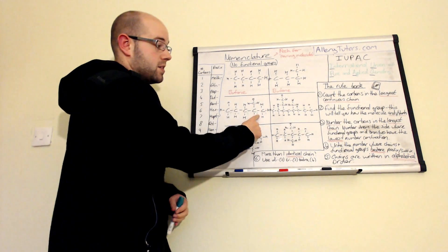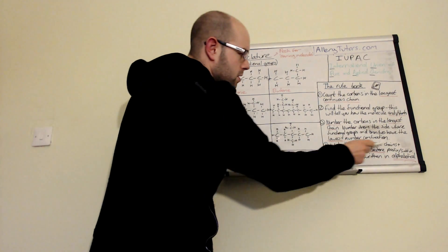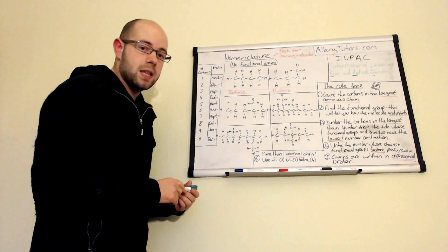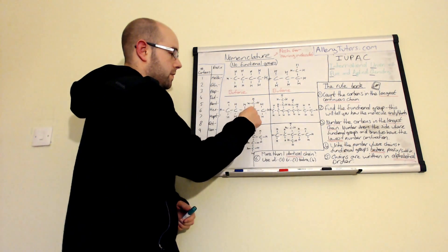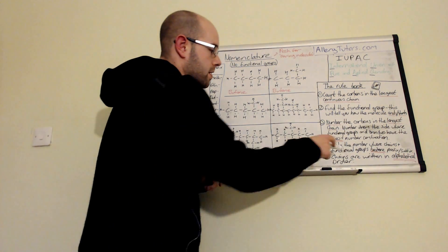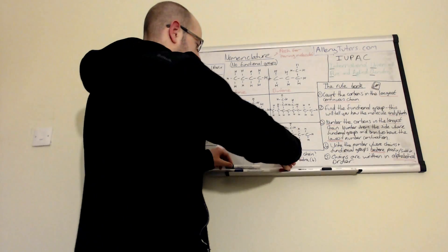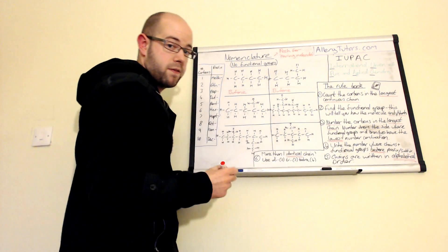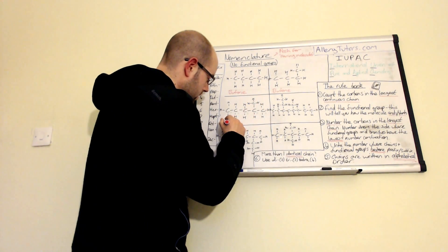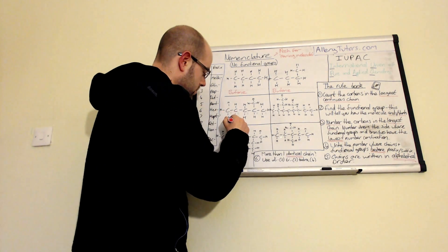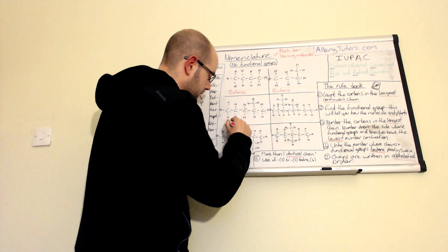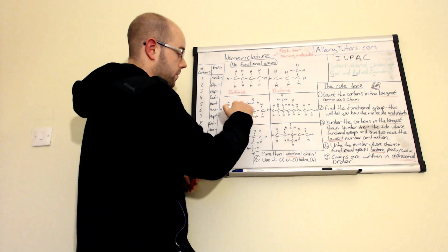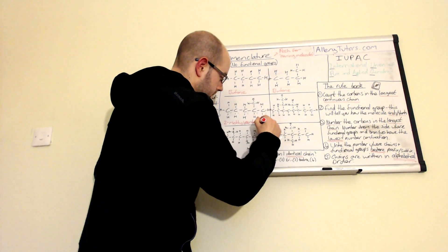Our group is hanging off the second carbon. We write the number where the chain is, so we have a two. Hanging off that we have a methyl group because it's one carbon - a methyl group hanging off the second carbon. We always put the number before the actual prefix or suffix and separate numbers and letters with a dash. So this is 2-methyl, and then our core chain of one, two, three, four, five carbons is pentane. The full name is 2-methylpentane. Separating numbers and letters with a dash is really, really important.